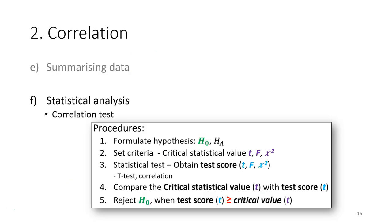For statistical analysis, we use the same steps as the t-test. We formulate our hypothesis and set the criteria. For correlation, we refer to the t-table and use the t-test to test the strength of the relationship. After that, we compare the calculated t with the critical t and make a conclusion based on the result.